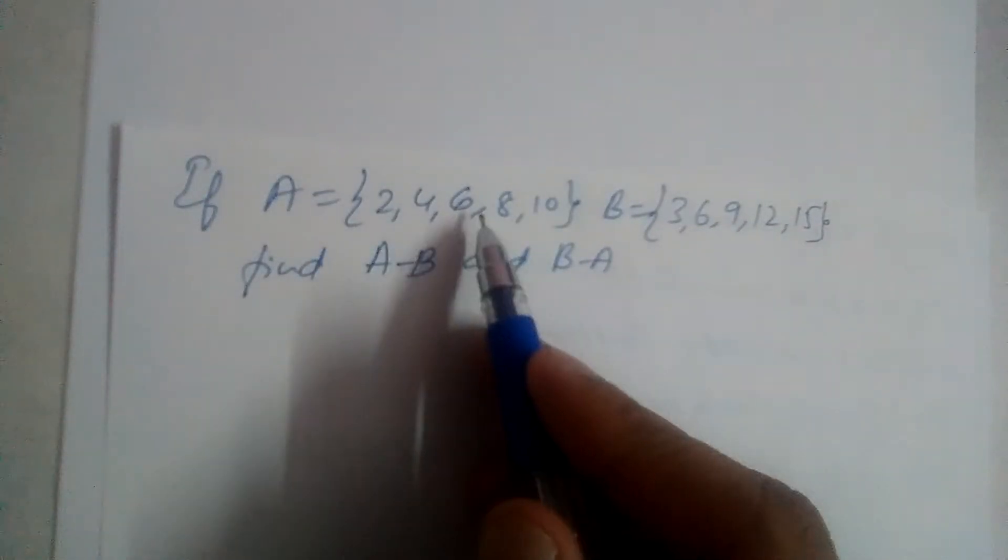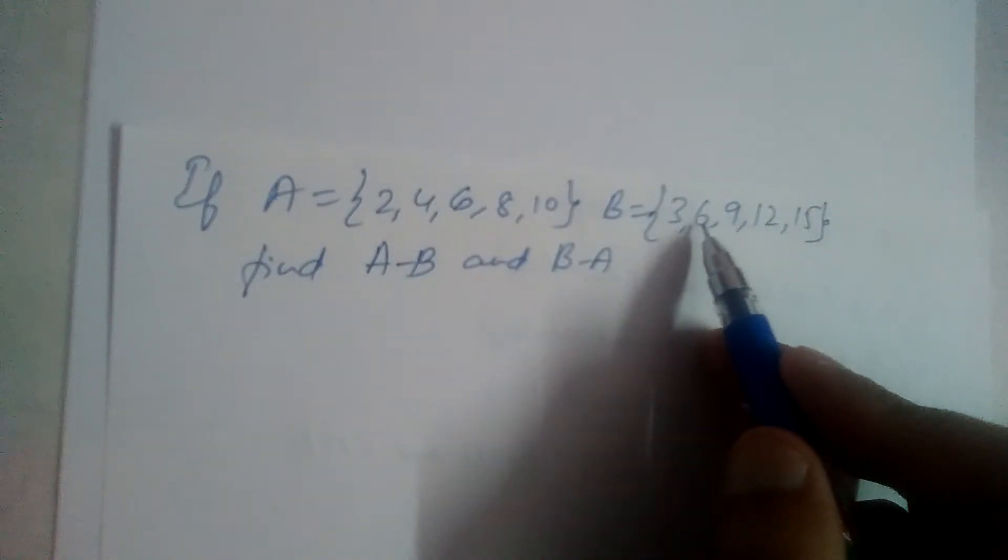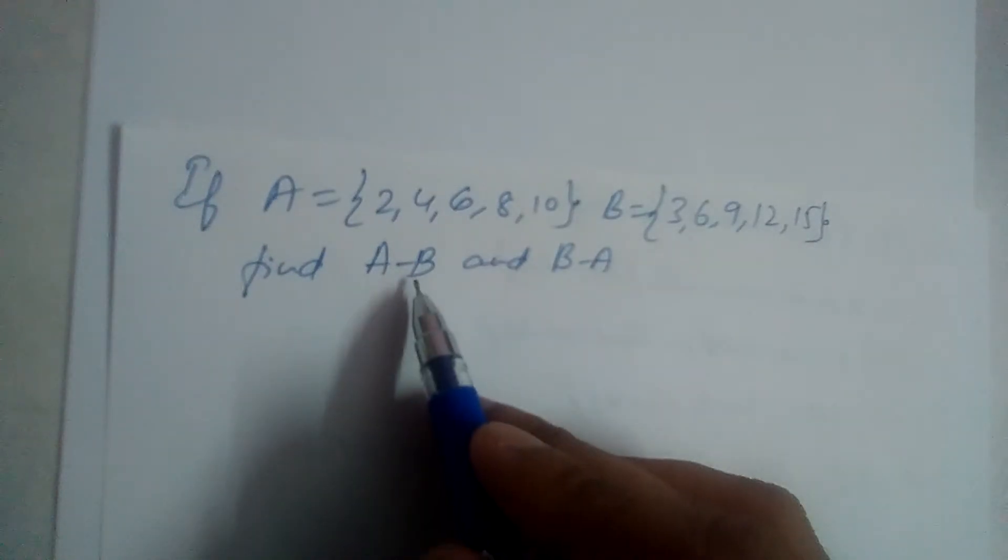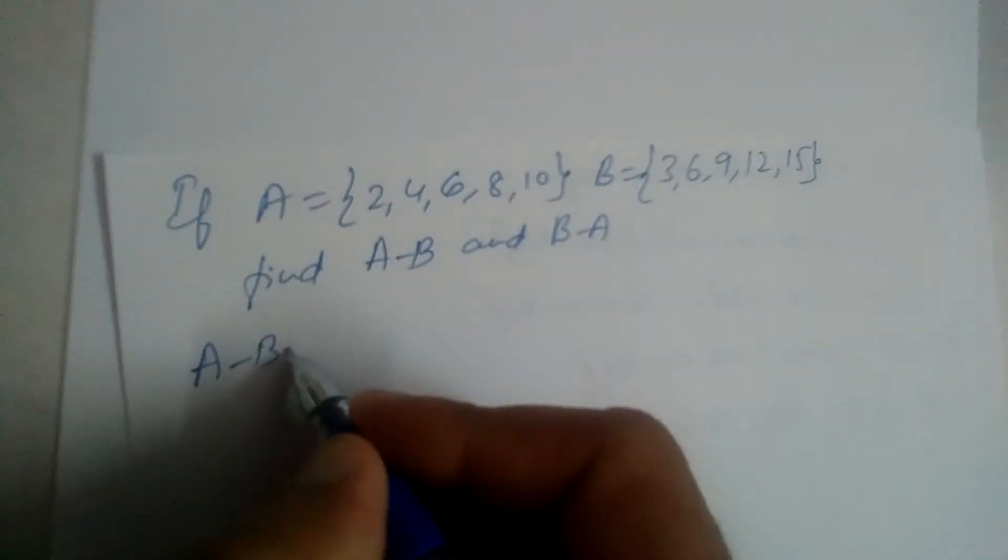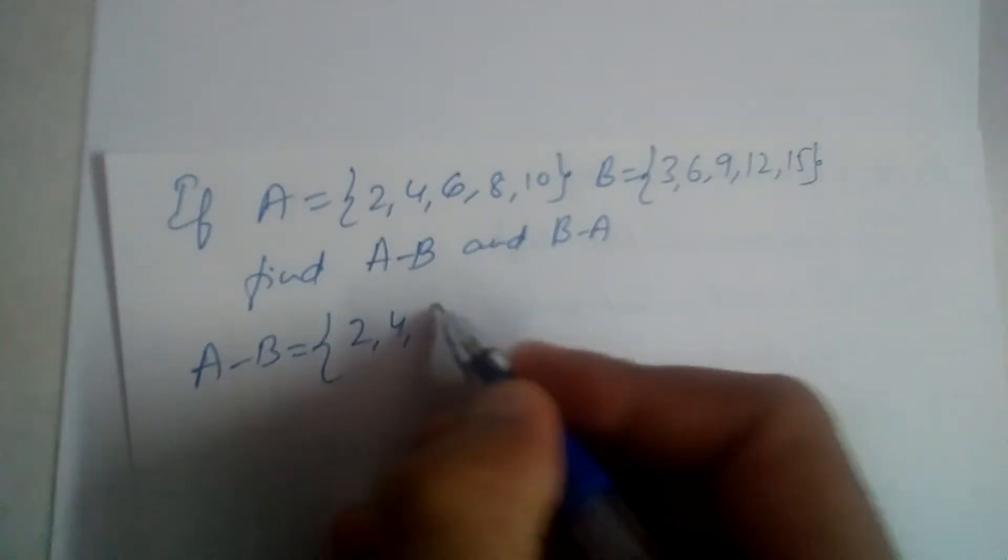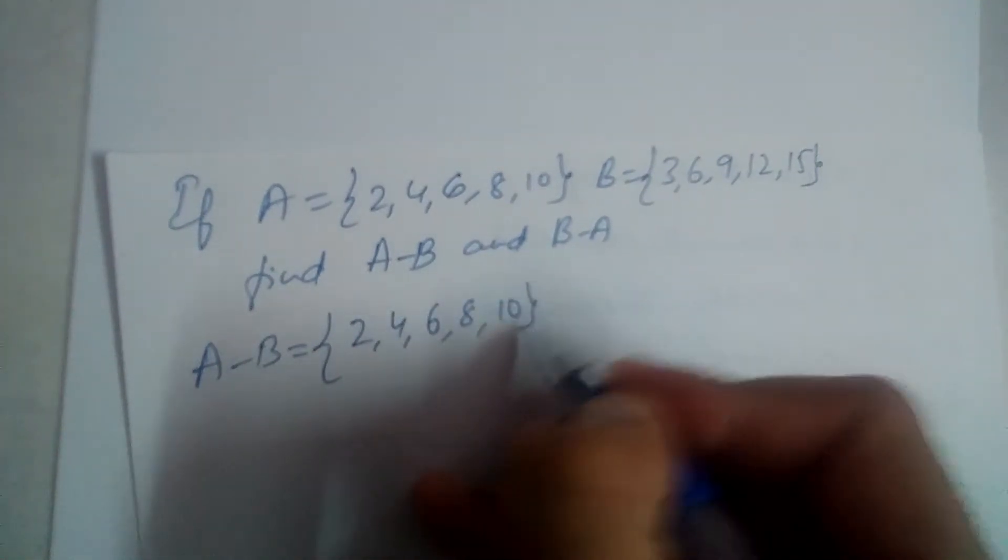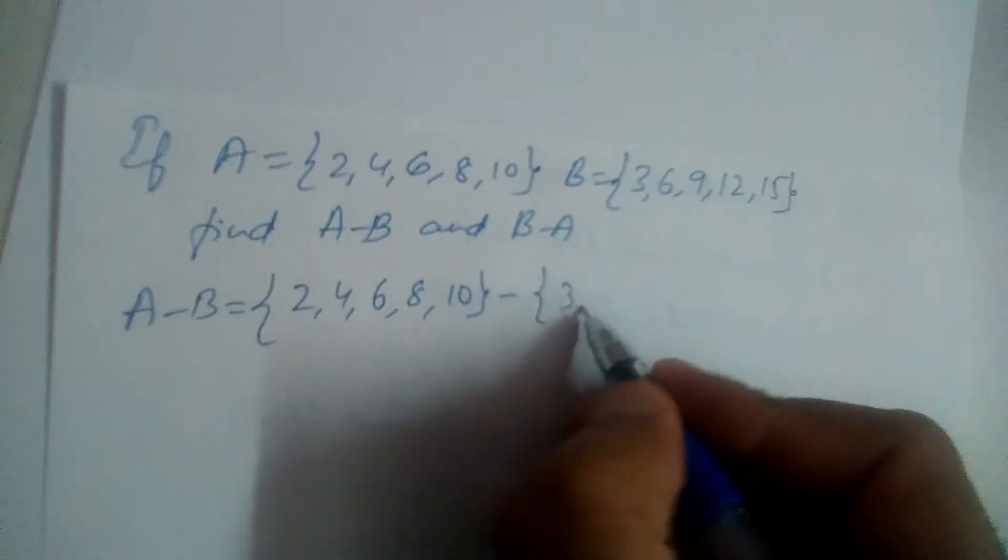If A is equal to 2, 4, 6, 8, 10 and B is 3, 6, 9, 12, 15, find A minus B and B minus A. So A minus B first: 2, 4, 6, 8, 10 minus 3, 6...